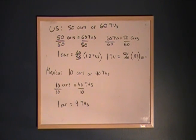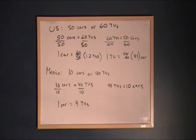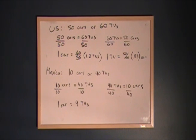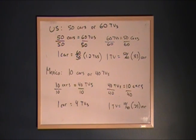We know that 1 TV is going to equal the reciprocal — one quarter of a car. To show the math: 40 TVs equals 10 cars; dividing both sides by 40 gives us 1 TV equals 10/40, or 1/4, or 0.25 of a car.